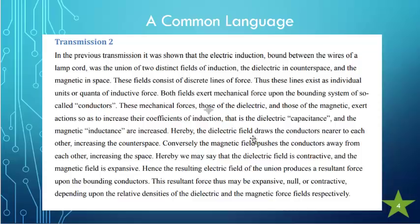The two work together to create a balance between the two. The dielectric field draws the conductors nearer to each other, increasing counter space. Instead of saying decreasing space, we're saying it increases counter space. Conversely, the magnetic field pushes the conductors away from each other, increasing space. We may say that the dielectric field is contractive and the magnetic field is expansive.